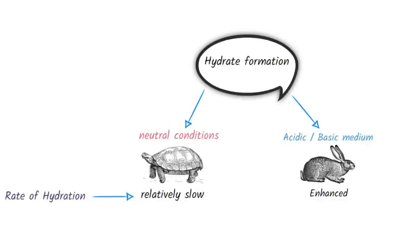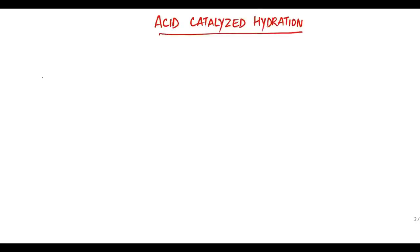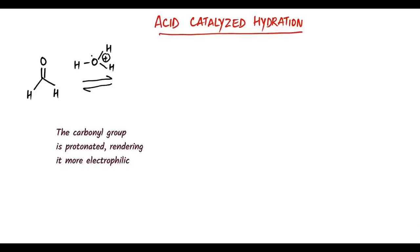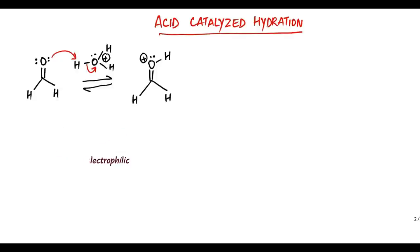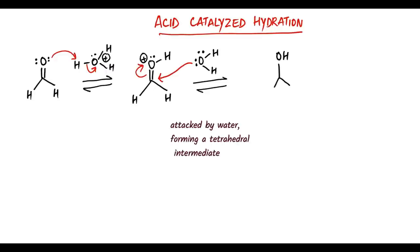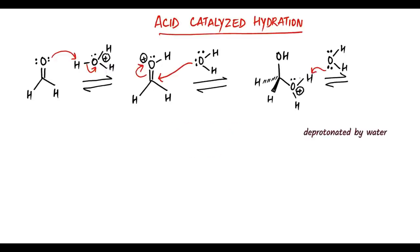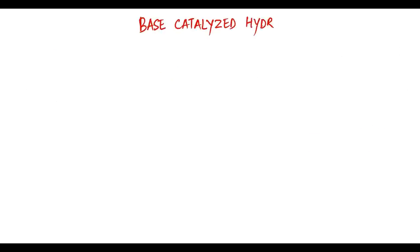The reaction can be either acid-catalyzed or base-catalyzed, allowing the equilibrium to be achieved much more rapidly. Under acid-catalyzed conditions, the carbonyl group is first protonated, generating a positively charged intermediate that is extremely electrophilic. It bears a full positive charge. This intermediate is then attacked by water to form a tetrahedral intermediate. The tetrahedral intermediate is deprotonated by water to form the hydrate.